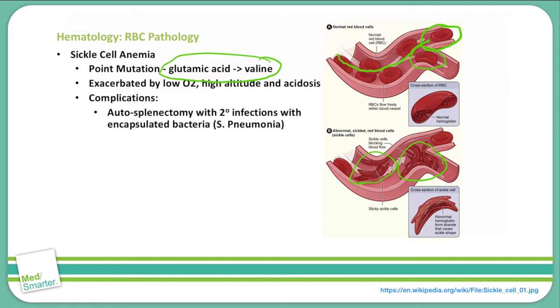So our complications, you can have an autosplenectomy, and then beyond that have secondary infections with encapsulated bacteria like strep pneumonia. As I just mentioned, you can have a vascular occlusive crisis where there is a lot of pain, specifically in distal parts of the body where you see small capillaries, and those sickle cells are getting stuck and causing a lack of oxygen to those distal tissues. We also can see salmonella osteomyelitis once again because of encapsulated bacteria.